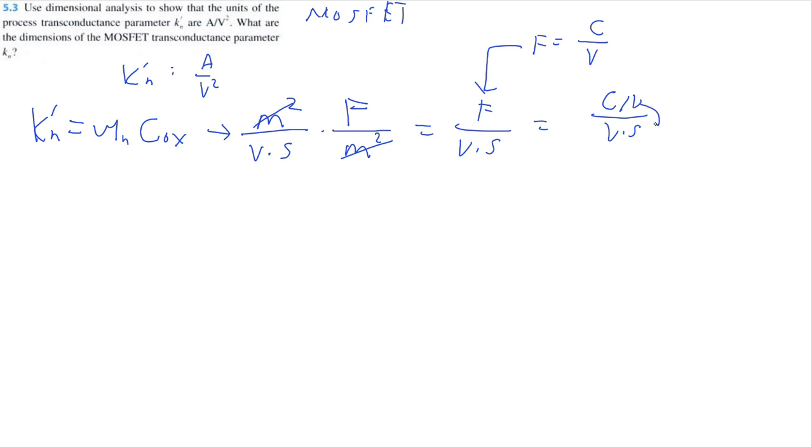And this volt can just drop down to the denominator, so that's coulomb per volt squared seconds. And it looks like I'm going to just make amps from here because an amp is equal to a coulomb per second. So now we just have amp per volt squared. Perfect.